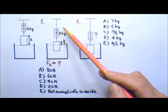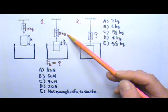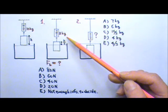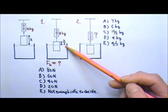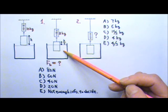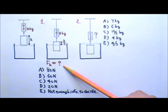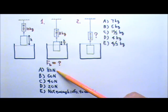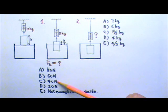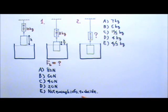Question 1: The scale reads 8 kg when only 1/3 h of the block is above the surface of the liquid. What is the buoyant force acting on the block at this time? Is it 80 N, 60 N, 40 N, 20 N, or not enough information to decide?